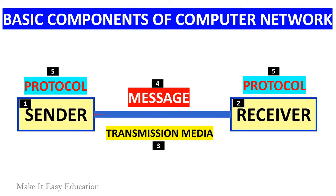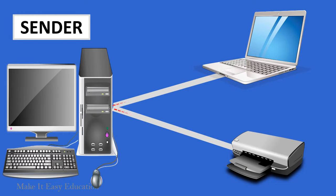There are five basic components of a computer network: sender, receiver, transmission media, message, and protocol. The sender is the device that has the data and needs to send the data to another device connected to the network.